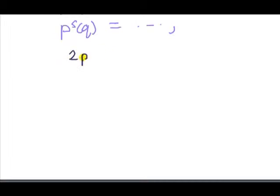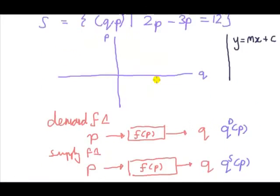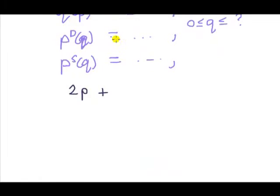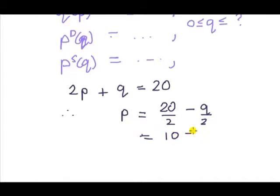So the demand set is of the form 2P plus Q equals 20. Therefore, rearranging it for P, we have P equals 20 minus Q, divide both sides by 2, in other words, 10 minus a half Q.